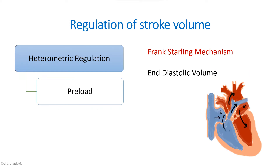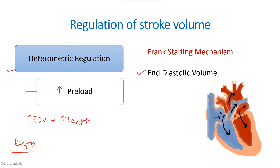The first type of stroke volume regulation is called heterometric regulation. 'Hetero' means different and 'metric' means length — so here, cardiac output changes occur due to a change in ventricular muscle length. This happens because of increased preload, which is the end-diastolic volume. When end-diastolic volume increases, muscle fiber length increases, which according to the Frank-Starling law causes increased contractility, thereby increasing stroke volume and cardiac output.